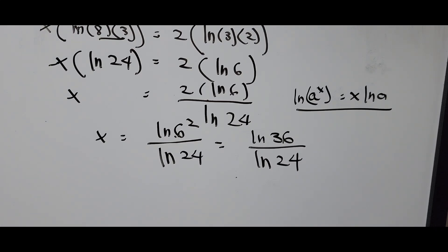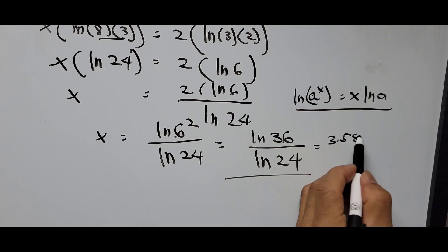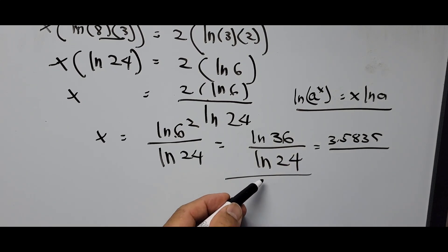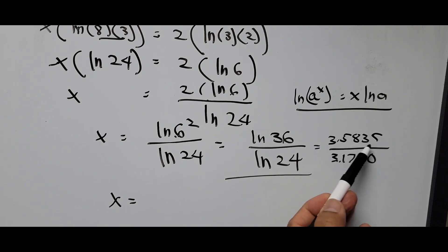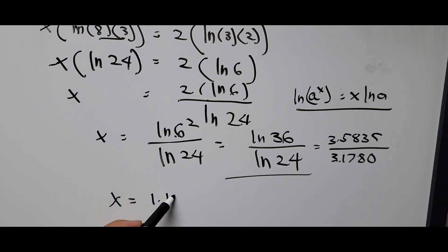That should be the answer already, but by using our calculator we can calculate the values. So ln of 36 is equal to 3.5835 divided by ln of 24, that is 3.1780. So x is equal to 3.5835 divided by 3.1780, which will be 1.1276. That should be the answer.